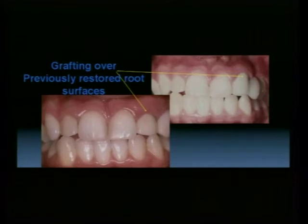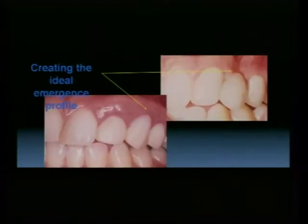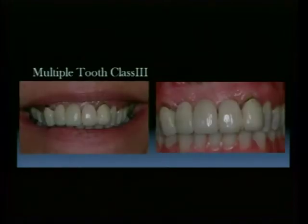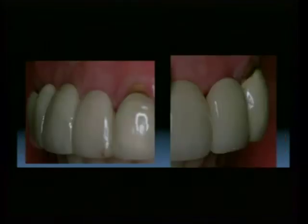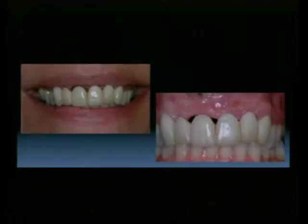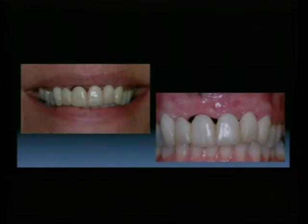Root coverage has been developed here, and from this view you can better appreciate the site developed in the canine area — from a ridge deficiency to an ovaponic. With the multiple tooth class three, we can't appreciate the full extent from this view because of the ridge-lap restoration. From profile, you can see these are significantly draped over the alveolus, and once we provisionalized we can appreciate the sizeable alveolar ridge defect, which is a combined lesion involving significant underlying hard tissue loss as well.